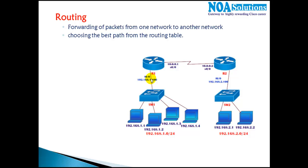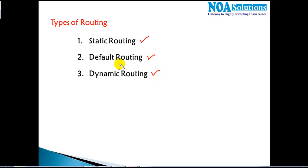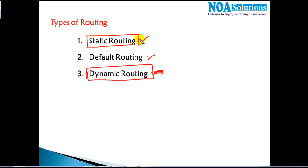To communicate between different networks you must configure routing. There are three types of routing: static routing, default routing, and dynamic routing. Dynamic routing is the most commonly used in production. We will first learn the basic concepts with static routing, and for routing packets to the internet we use default routing.